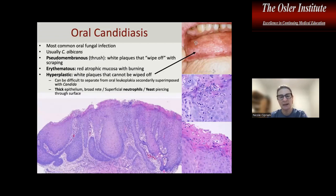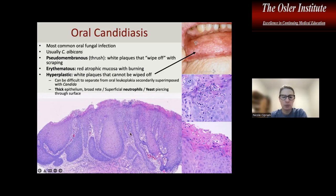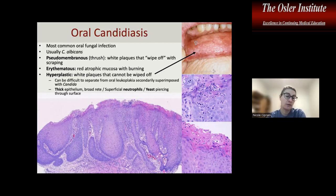Candidiasis may also present as a plaque that cannot be wiped off. If it's just thrush that clinicians can wipe off, we don't really see biopsies of those. However, in hyperplastic candidiasis, you have thickening with bulbous, neutrophilic inflammation in the surface and associated candida fungal hyphae piercing through it. In these cases it can be challenging to evaluate for dysplasia, so we may recommend re-biopsy after resolution of the infection.